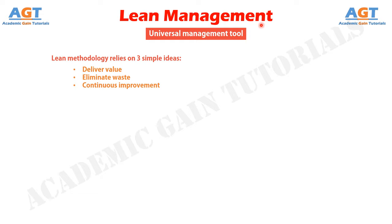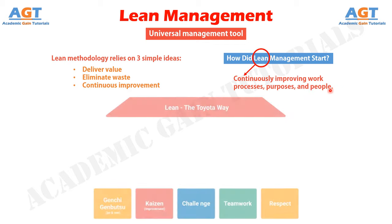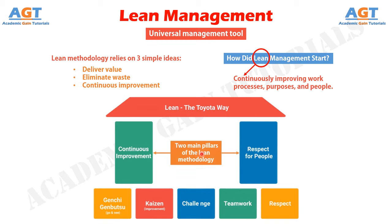What is lean management and how did it start? You need to realize that the lean methodology is about continuously improving work processes, purposes, and people. Instead of trying to hold total control of work processes, lean management encourages shared responsibility and shared leadership. The two main pillars of the lean methodology are respect for people and continuous improvement. A good idea or initiative can be born at any level of the hierarchy, and lean trusts the people who are doing the job to say how it should be done.